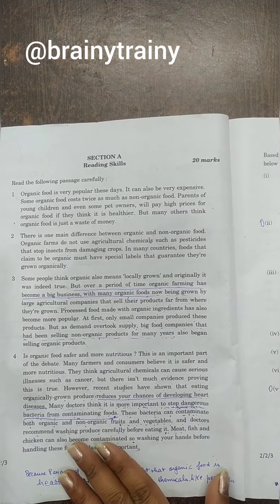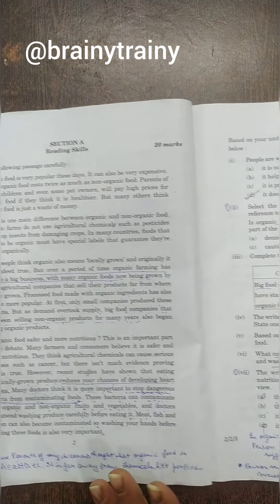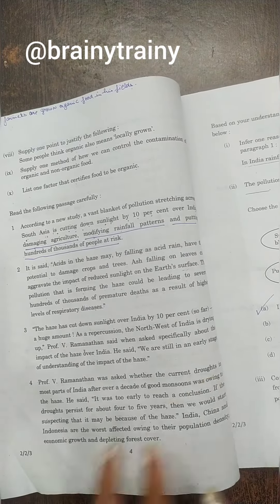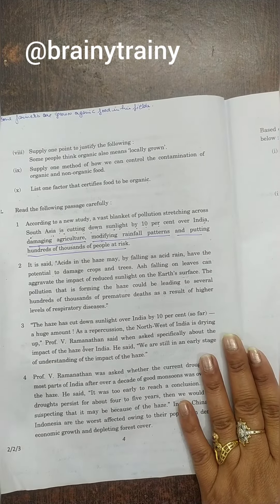The first paragraph is comprehension, it is on organic food and I have asked questions. Very easy questions, easily the answers find out. Second paragraph is very easy, it is also the question answers easily find out.